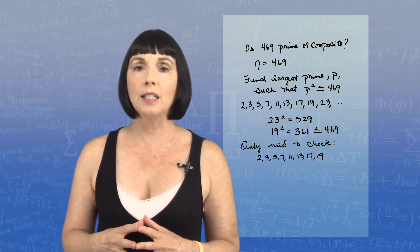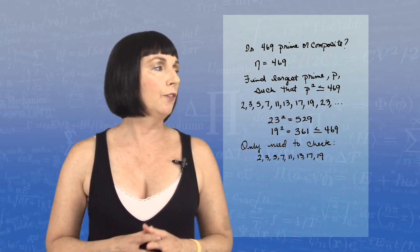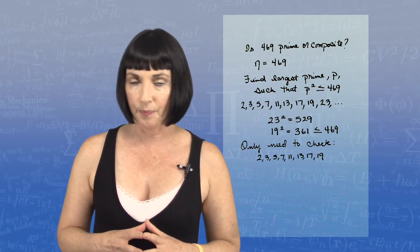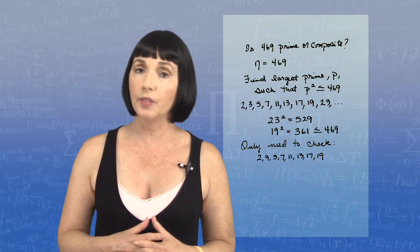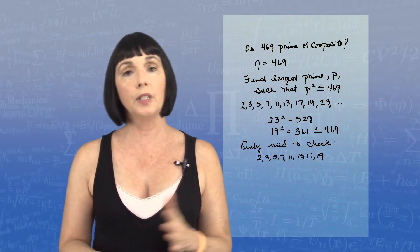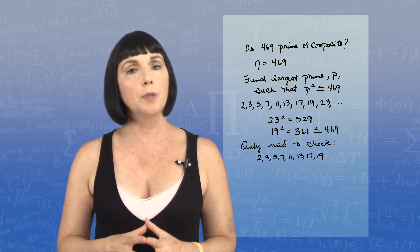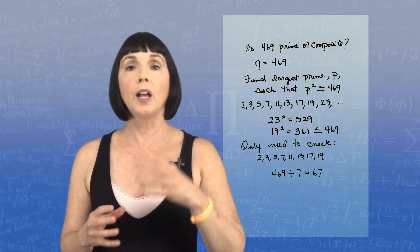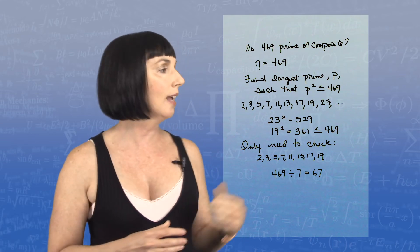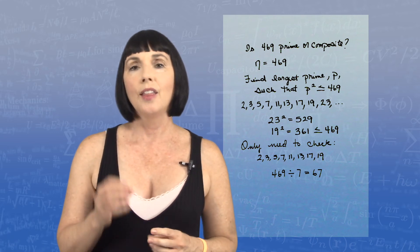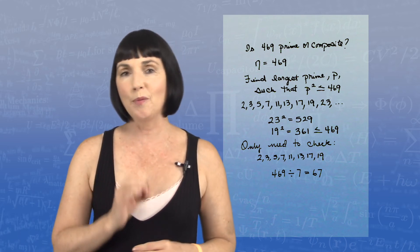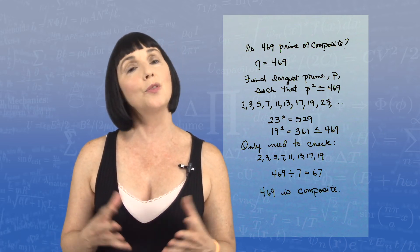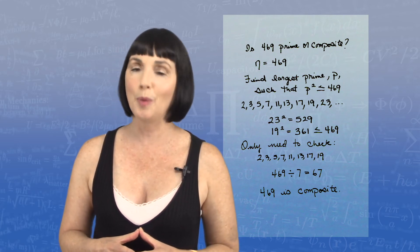So that means that we're checking 2, 3, 5, 7, 11, 13, 17, and 19. Now 469 is not evenly divisible by 2 because it's not an even number. It's not evenly divisible by 3 or 5. What about 7? If I divide 469 by 7, I get 67. Therefore, we did find a prime factor of 469. So 469 is a composite number.